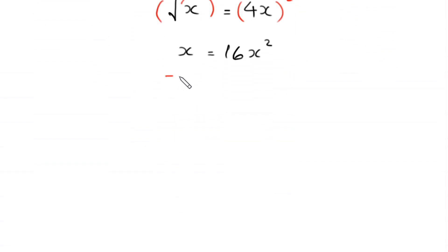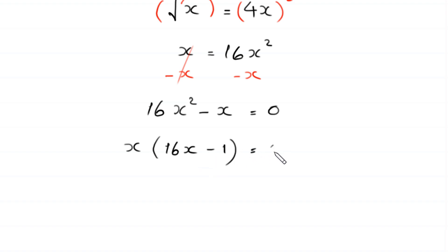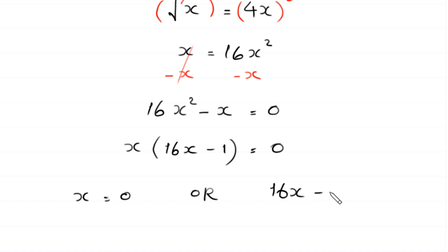Now we subtract x from both sides, so this equation becomes 16x squared minus x equals 0. From here we can factor out x, giving us x times (16x minus 1) equals 0. So either x equals 0 or 16x minus 1 equals 0.